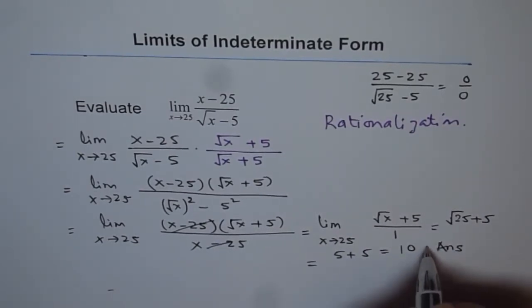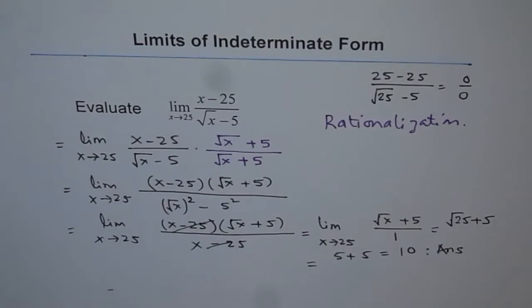So that is the answer, 10. So limit of this function, x minus 25 divided by square root of x minus 5 is 10. So the function approaches a value of 10 as x approaches 25. That is what it means.